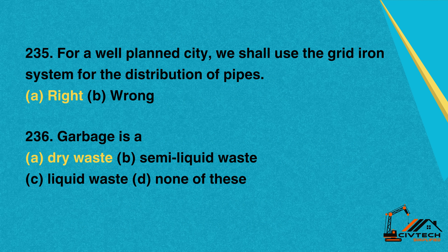Question 235: For a well-planned city, we shall use the grid iron system for the distribution of pipes. A. Right. B. Wrong. Correct option: A. Right.